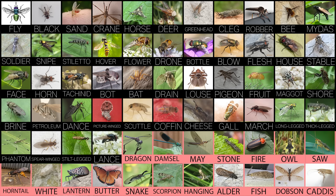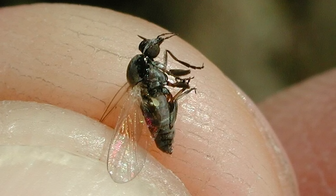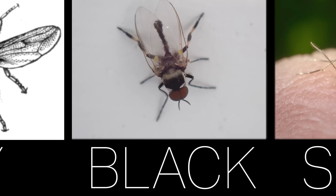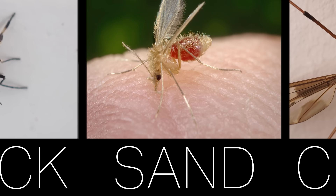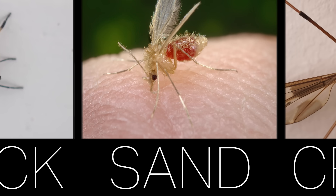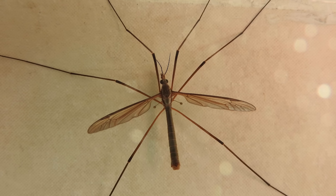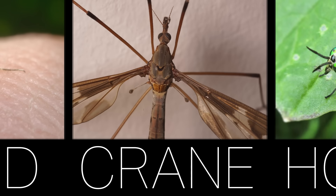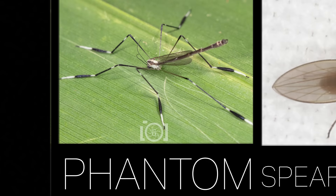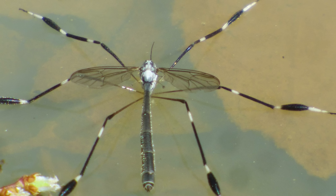Starting with the Nematocera: first is the black fly, named for their typically dark coloration — 'fly' follows the Old English route, so 'black' is purely descriptive. Next are sand flies, named for their sandy habitats and coloration, reflecting their environment rather than their taxonomy. Next are the crane flies, so-called for their long legs and awkward flight resembling cranes. Some crane flies that look fancy are called phantom flies, named because their black-and-white coloration creates an optical illusion that makes them appear to disappear and reappear in the air.